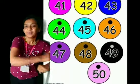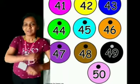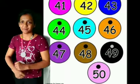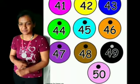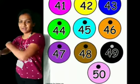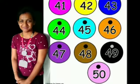Forty-one, forty-one, forty-two, forty-two, forty-three, forty-three, forty-four, forty-four, forty-five, forty-five, forty-six, forty-six, forty-seven, forty-seven, forty-eight, forty-eight, forty-nine, forty-nine, fifty, fifty.